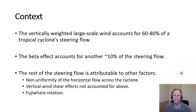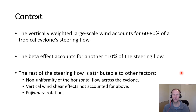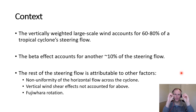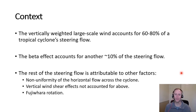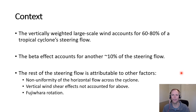There's also the idea of Fujiwara rotation, dating back almost a hundred years, where two different cyclonic features are close enough to each other such that the wind associated with one can steer the other and vice versa. We'll introduce that toward the end of this video.